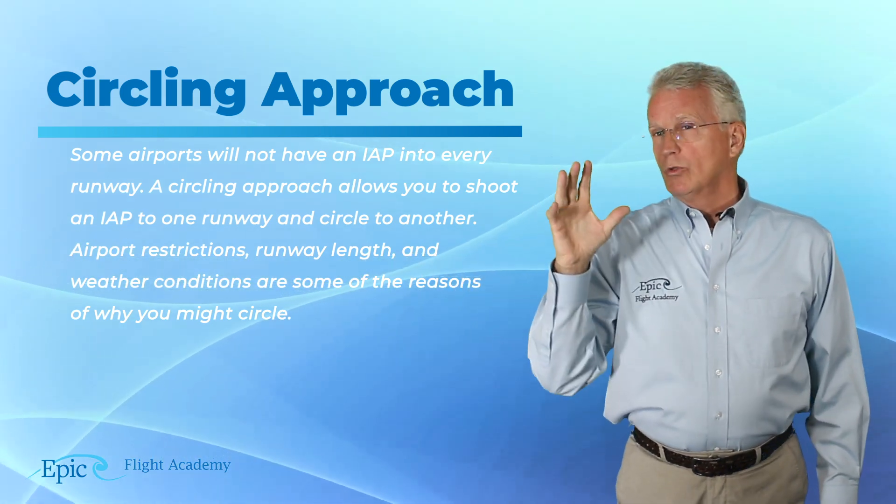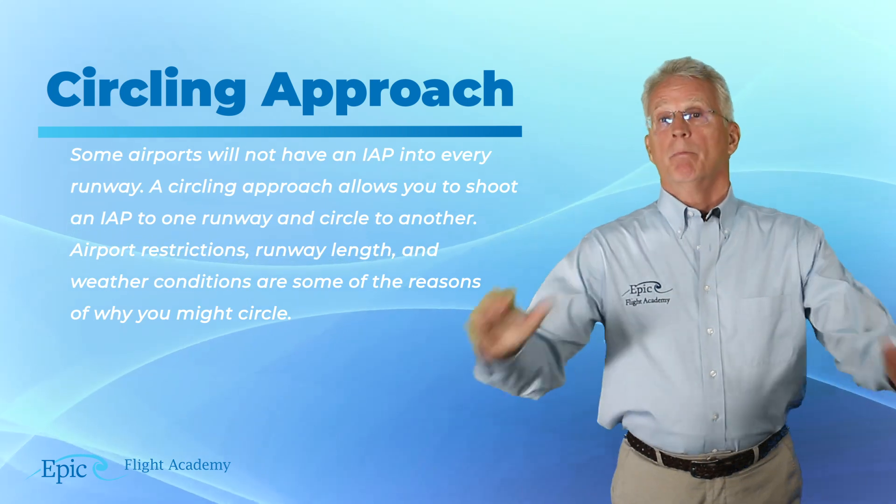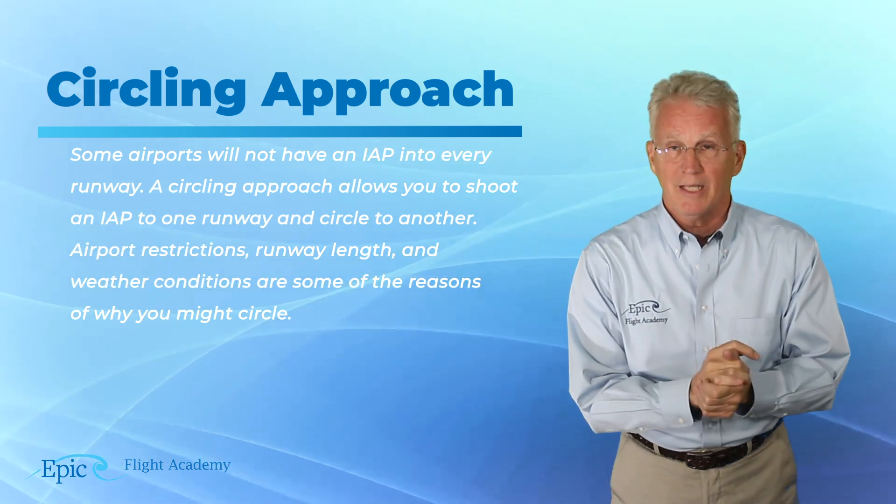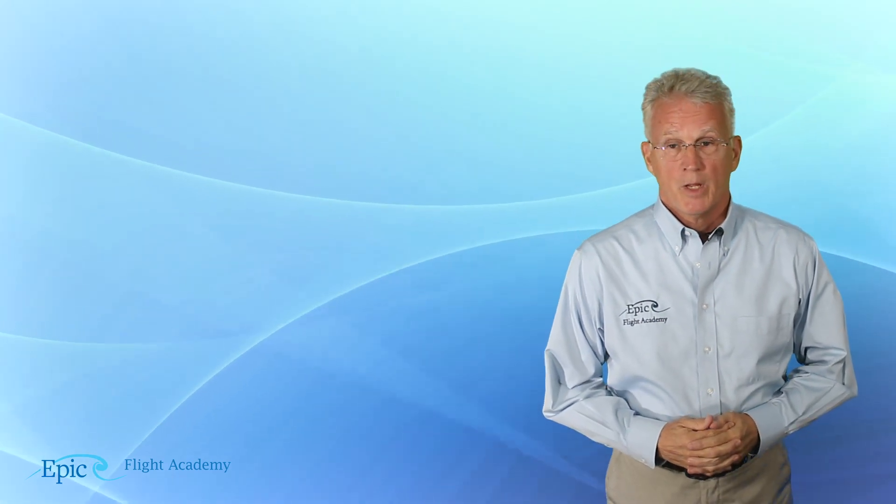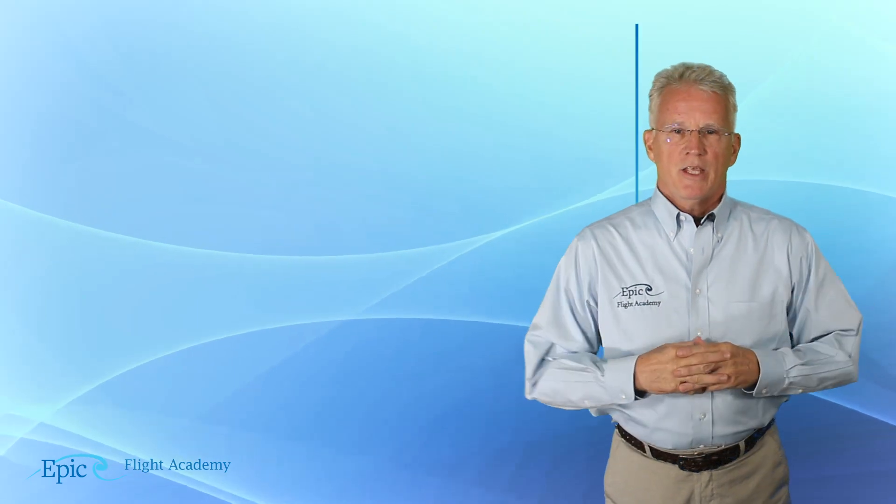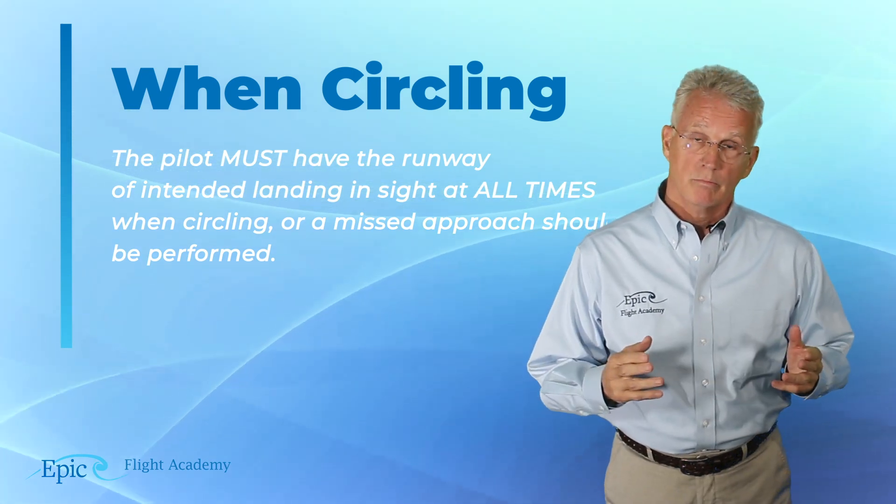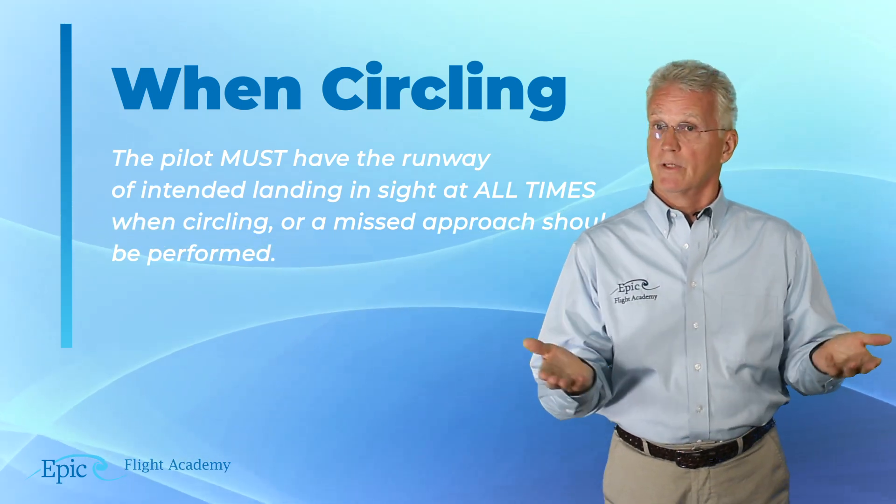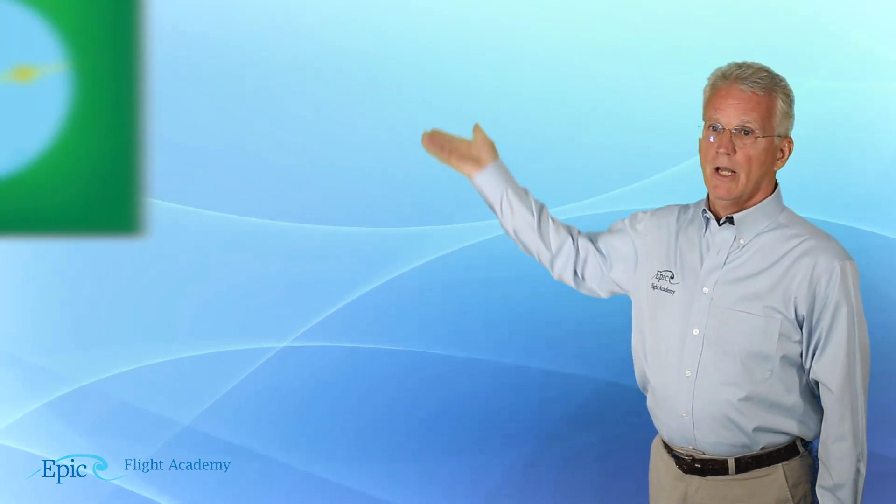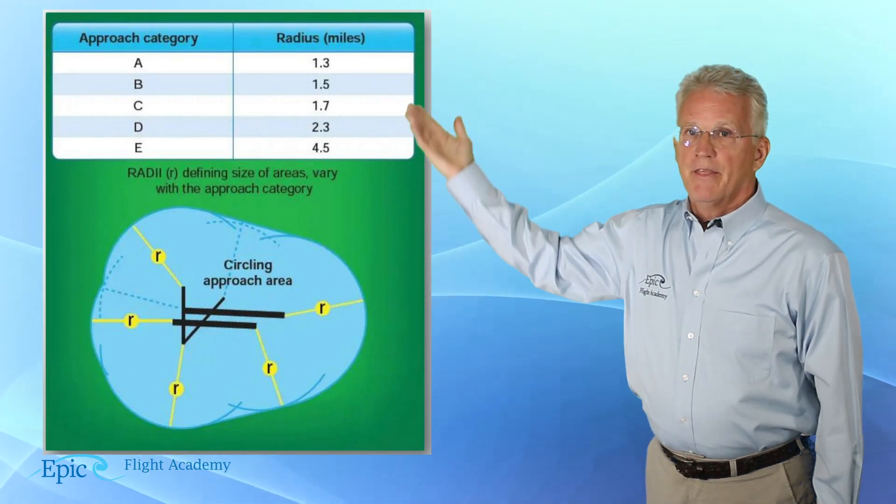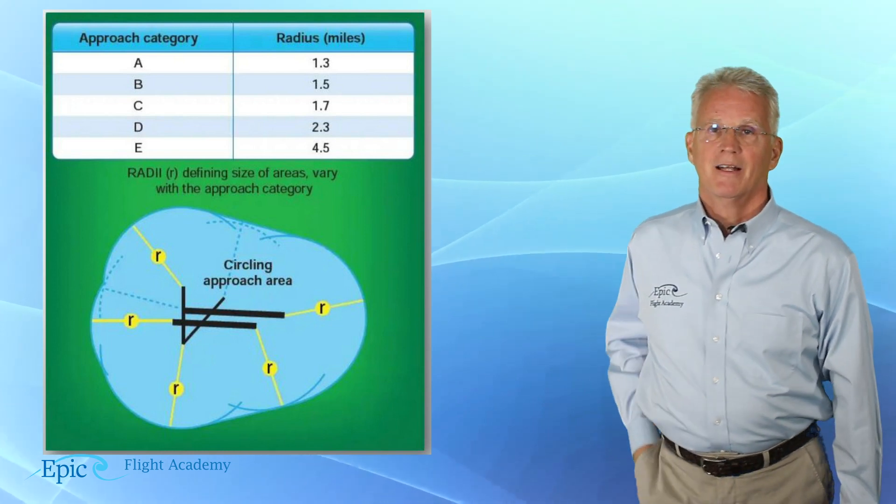Now we won't talk about categories in detail. We've covered that in another video and you can review that with your flight instructor. But you remember that categories A through E are based on the aircraft's speed, and I want you to review that with your flight instructor. Now when circling, the pilot must have the runway of intended landing in sight at all times. Or if we were to lose sight of the runway of intended landing, what do we do? We execute the missed approach procedure. Now you can see in our graphic here categories A through E and that circling radius from, and you can see on the picture, the approach end of that runway.